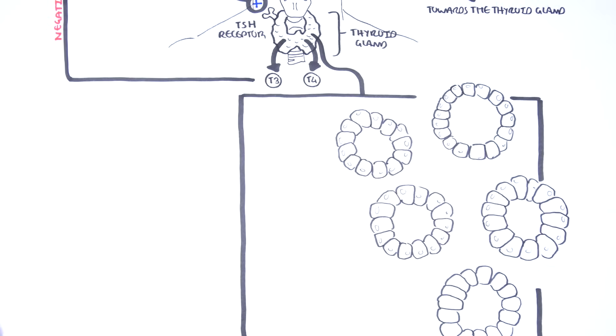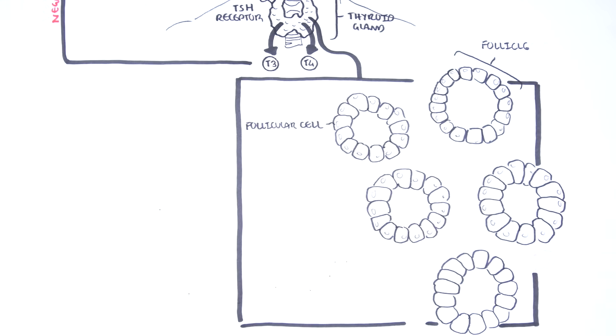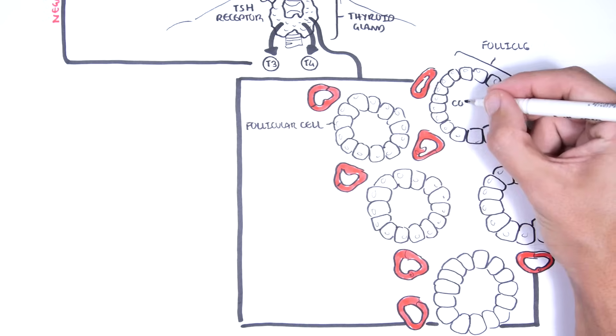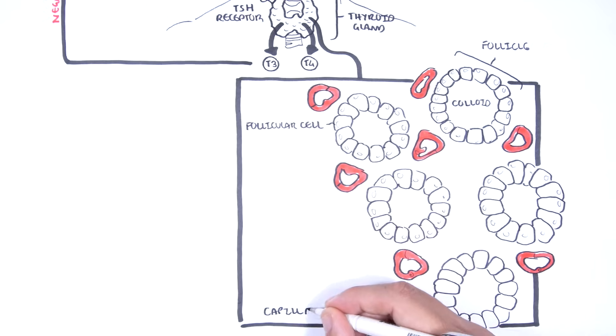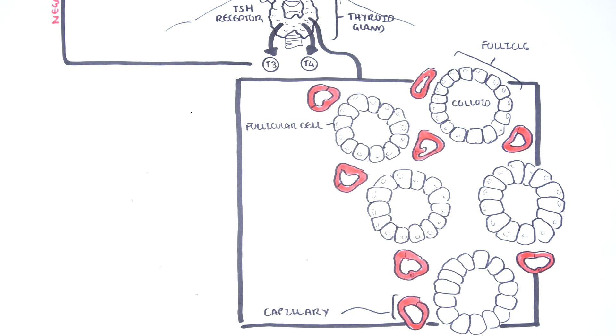The functional units of the thyroid glands are the follicles, made up of follicular cells. The center of the follicle is the colloid. The thyroid gland has a rich blood supply, and here are the capillaries, which will bring TSH, thyroid-stimulating hormones, to these cells.